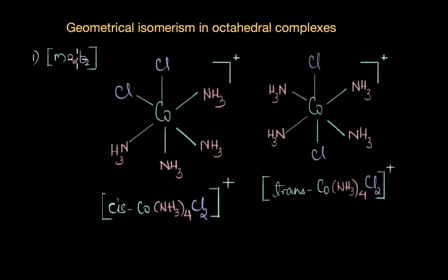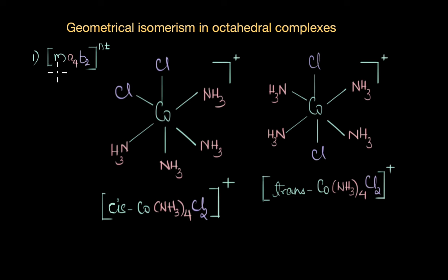MA₄B₂ is the general formula for this type of octahedral complex. We haven't taken into account the charge of the complex, as that depends on the oxidation state of the metal, the type of ligands, and their charges. A common example of this type is [Cu(NH₃)₄Cl₂]⁺, and this type of complex exhibits two geometrical isomers.